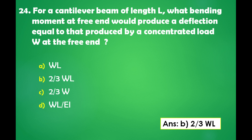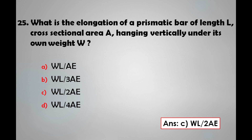For a cantilever beam of length L, what bending moment at the free end would produce a deflection equal to that produced by a concentrated load W at the free end? A) WL, B) 2/3 WL, C) 2/3 W, D) WL/EI. The answer is: for a cantilever beam of length L, the bending moment at the free end would produce a deflection equal to that produced by a concentrated load W at the free end is 2/3 WL.